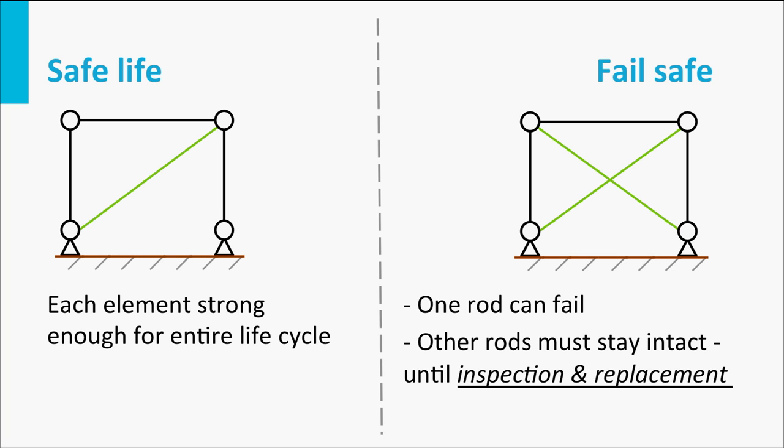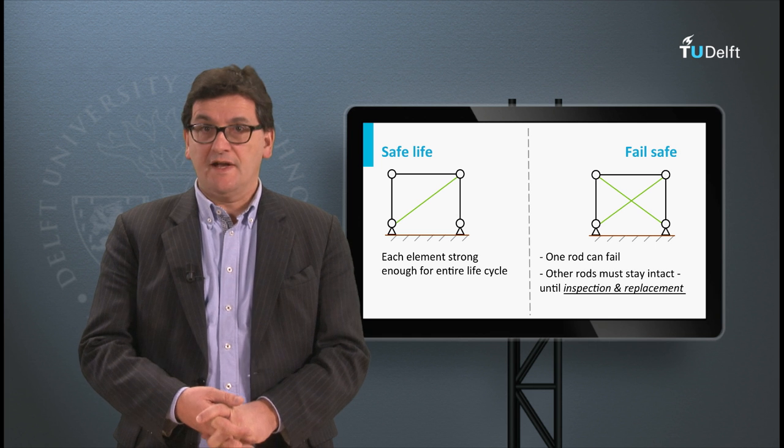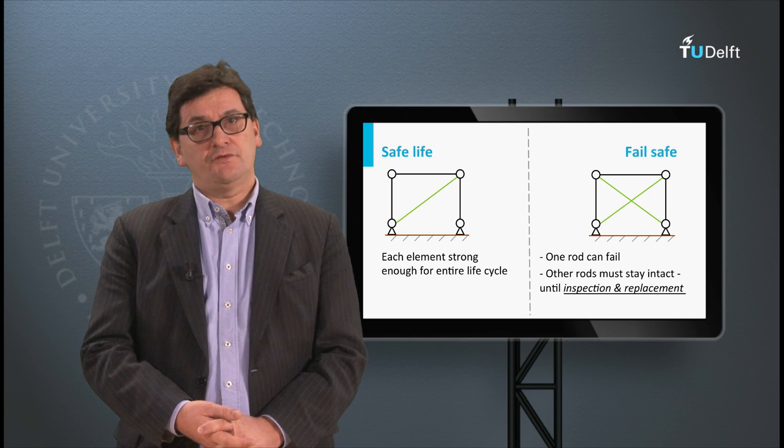If we look at a truss with two diagonal bars, one bar could fail and the truss will not collapse. The other bars take over the loads of the failed one. During the service life of this truss, failure may occur. However, we have to inspect the truss frequently to see if an element has failed. And if an element has failed, we should replace it.